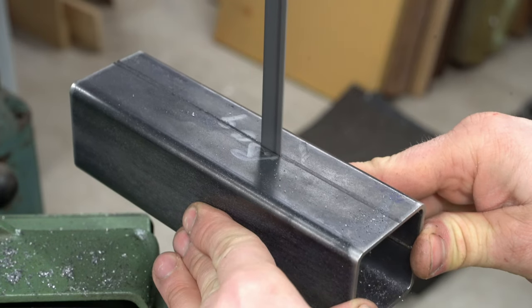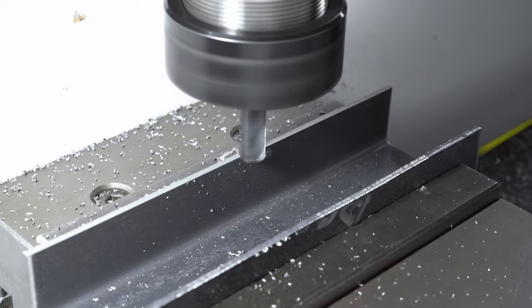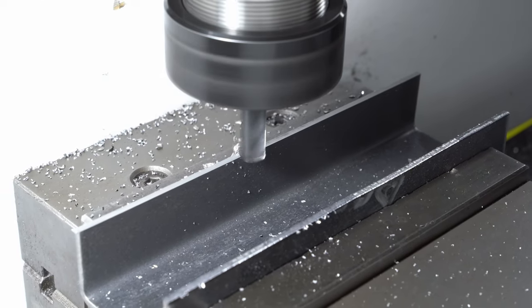Here we are splitting a square tube in half to make the motor mount arm. Milling those sawn edges.